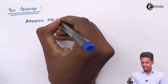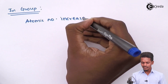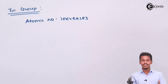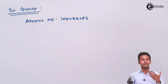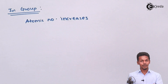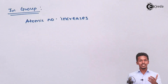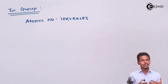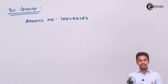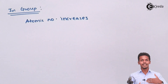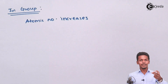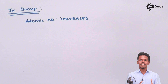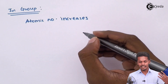In a group, the atomic number increases, but not gradually — it increases rapidly. For example, lithium has an atomic number of 3, sodium belonging to the same group has an atomic number of 11, and potassium has an atomic number of 19. So there is a large difference when jumping from the upper element to the lower element, and the atomic size increases rapidly.